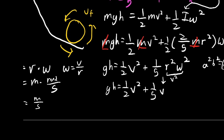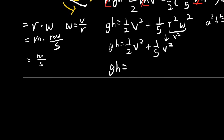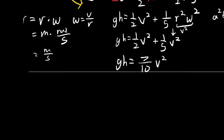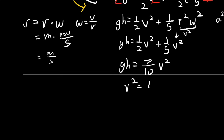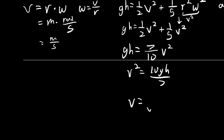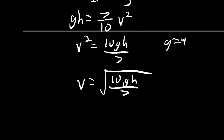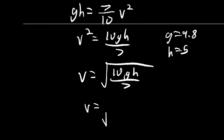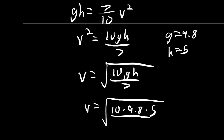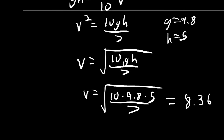Combining the right-hand side: one-half plus one-fifth equals seven-tenths, so gh = (7/10)v squared. Multiplying both sides by 10/7: v squared = 10gh/7, so v = sqrt(10gh/7). Plugging in g = 9.8 and h = 5: v = sqrt(10 × 9.8 × 5 / 7) ≈ 8.366 meters per second.